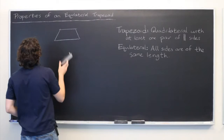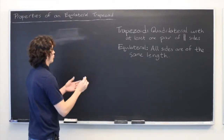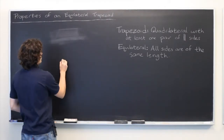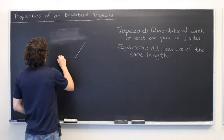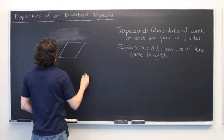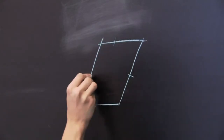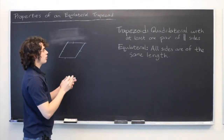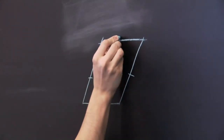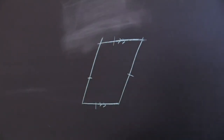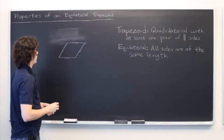So instead, we'll create a diagram using a more rigorous construction, using our definitions. We have four sides, all of the same length, and at least one pair of sides is parallel. What you get is a parallelogram or a rhombus.